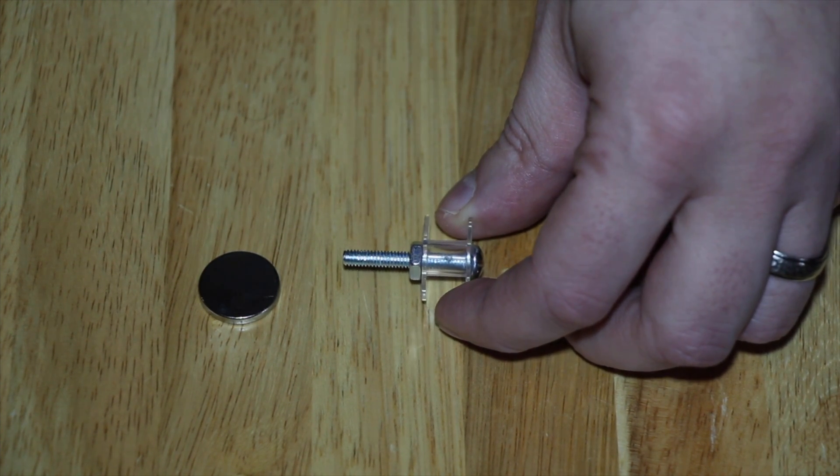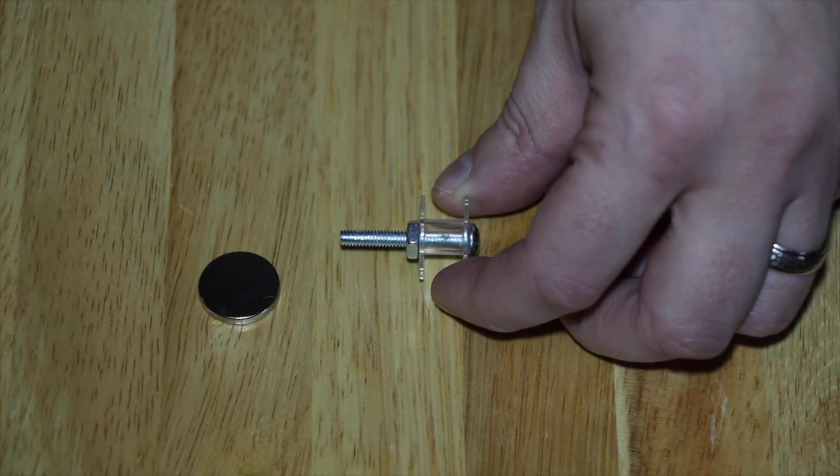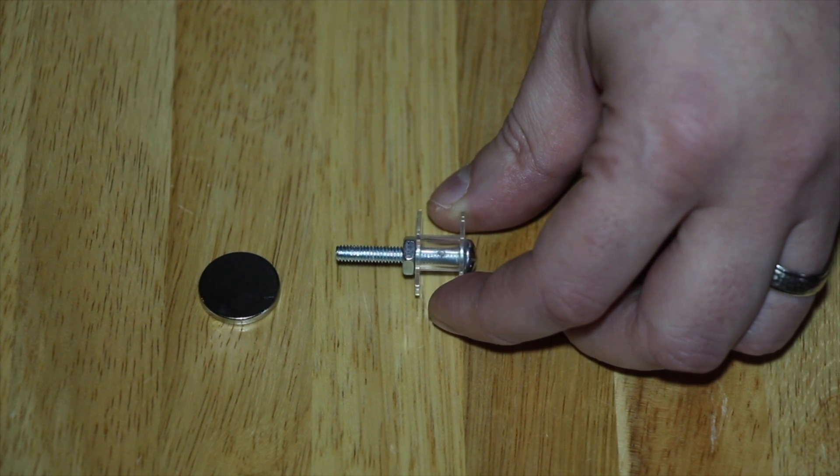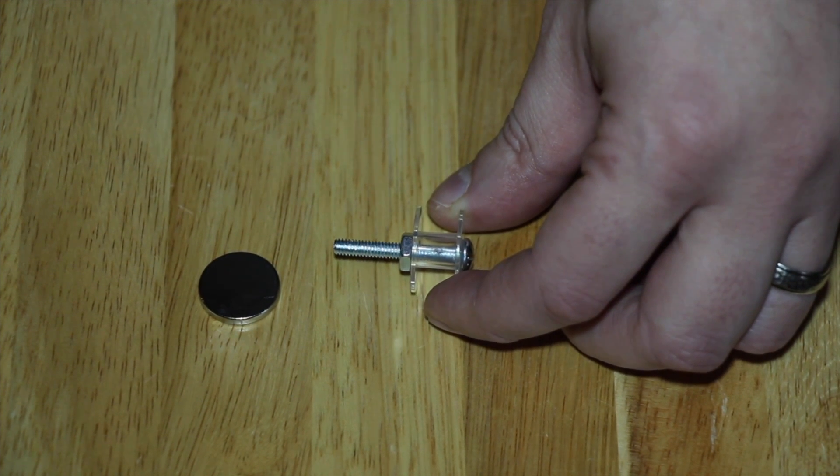Wrapping the magnetic wire, which is really thin stuff, around this sewing bobbin.